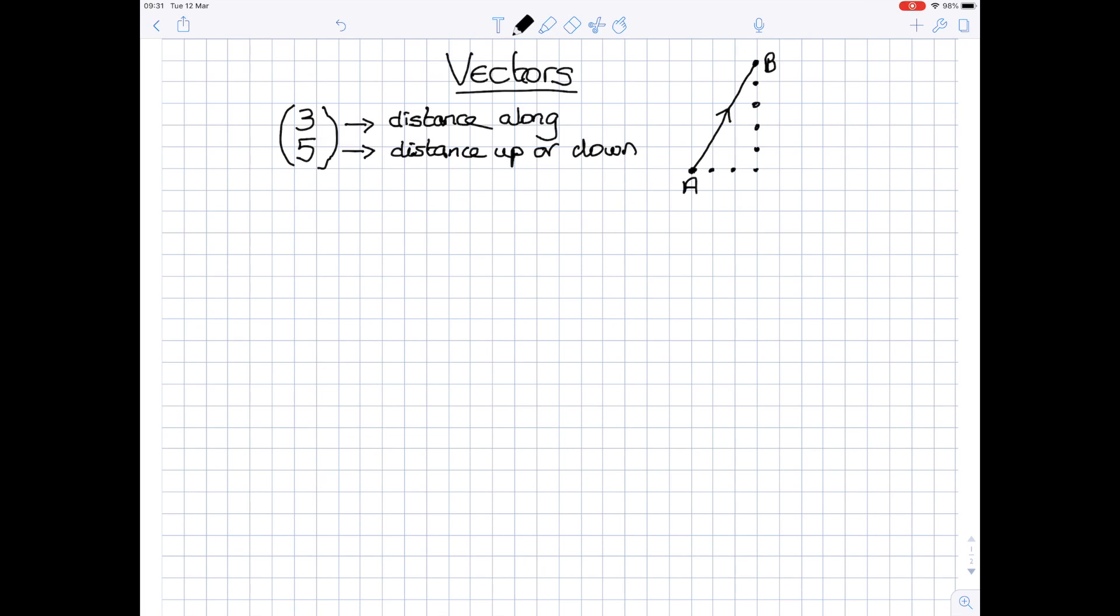So if I wanted to draw the vector described numerically as (-2, -1), this time I'd have a starting point, just a random starting point. Minus two means I move two units to the left. Minus one means I move one unit down. So (-2, -1) is a little vector, and again put the arrow on to show which way you are moving.